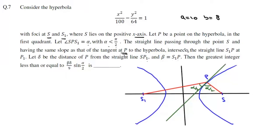Now it says a straight line passing through point s, having the same slope as that of the tangent at p, intersects the straight line s1p at p1. We draw a line passing through this point s which is parallel to the given tangent, and this line intersects s1p at p1. If we extend this, it will be this point p1.